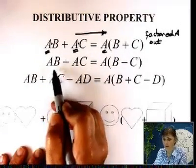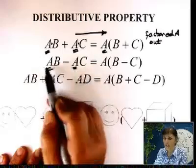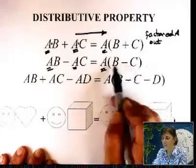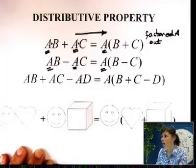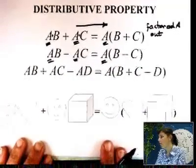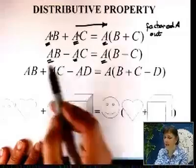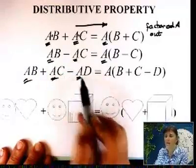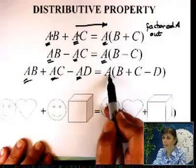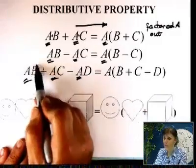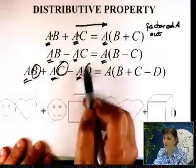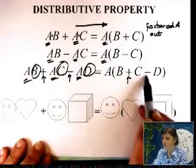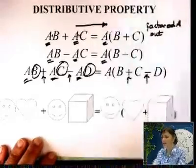You can do the same thing with subtraction. A is repeating and it's the common factor and you can pull A out and write parentheses B minus C. Or you can do this for more than two terms. A, B, A, C, A, D. It's repeating in three terms. It can repeat in 99 terms if you want. You can pull A out. So you have B left, C left, and D left. Here you have addition, here you have subtraction. Understand the logic of this.